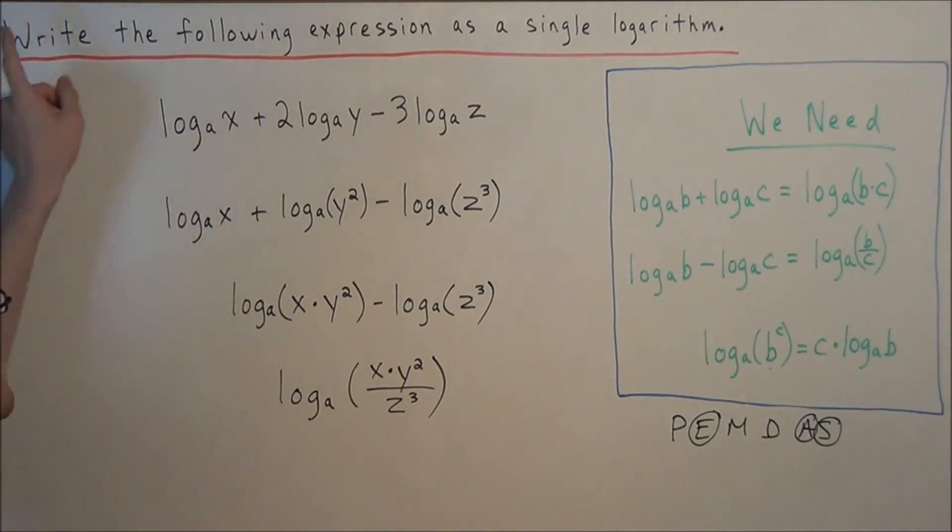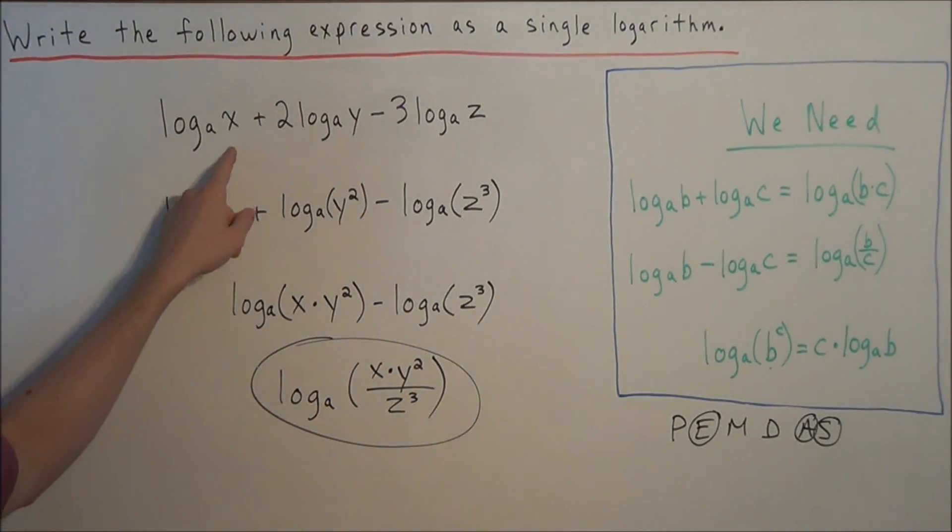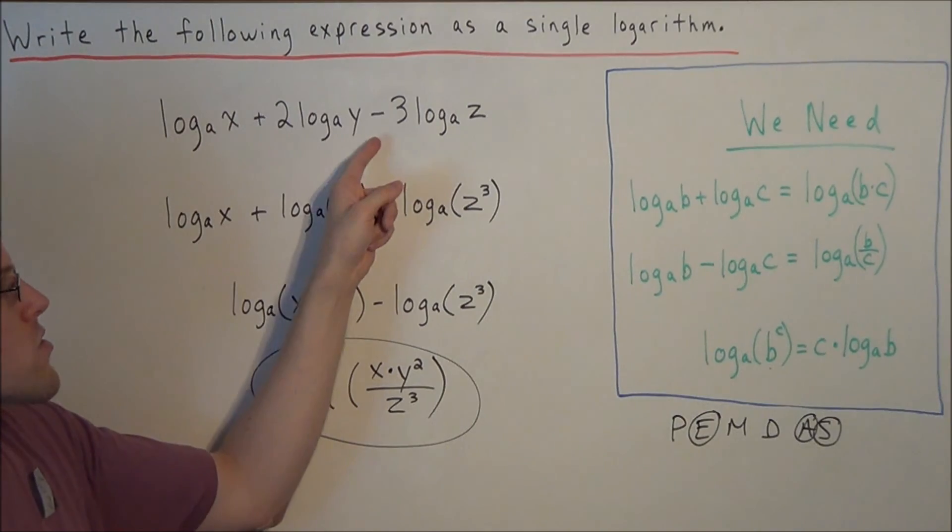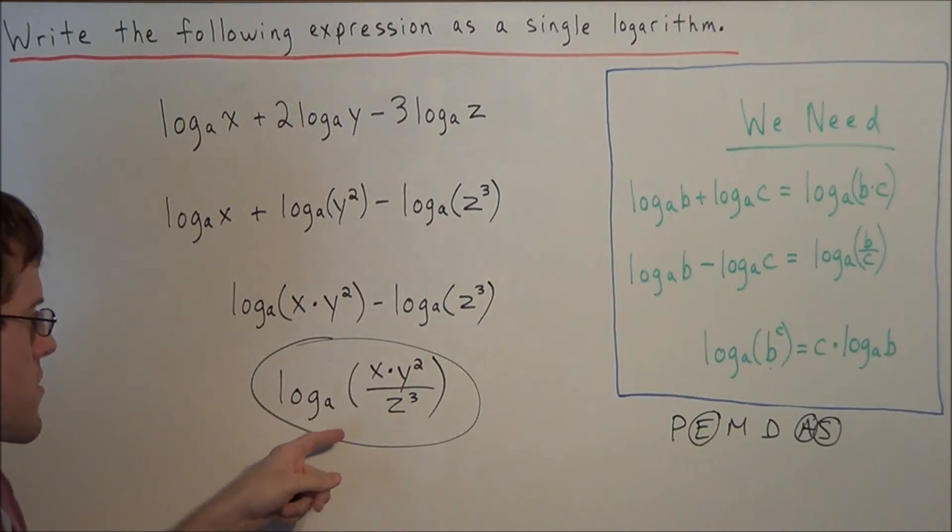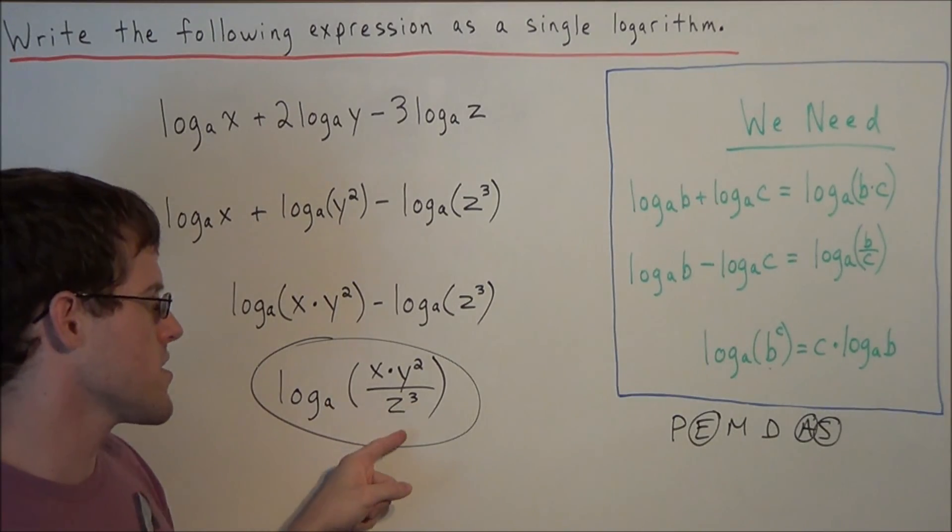So this would be our final answer to the problem. Write the following expression as a single logarithm. We have log base a of x plus two times log base a of y minus three times log base a of z simplifies to log base a of x times y squared divided by z to the third power.